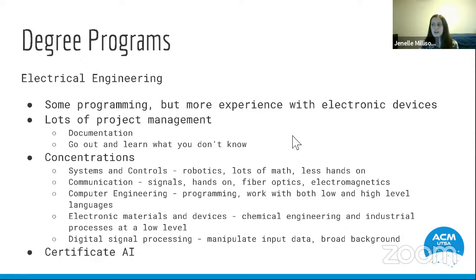The third concentration is computer engineering. Maybe you don't want a computer engineering degree because you're more interested in electronic devices, but you could still get a concentration where you learn some programming languages — both low-level languages such as assembly, and high-level languages like C or C++. The fourth concentration is electronic materials and devices, which is really about the industrial manufacturing processes of computer parts. You'll get a surprising amount of chemical engineering background from this — a really low-level area of study where you'll see how things like transistors are made.